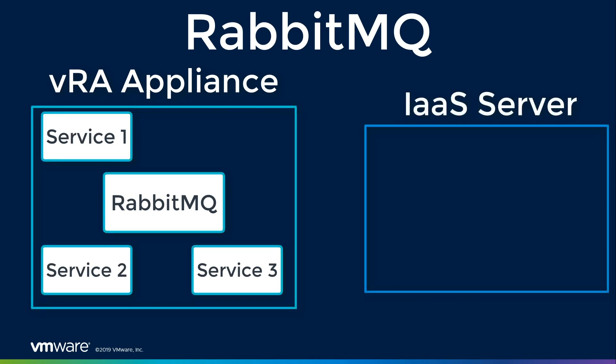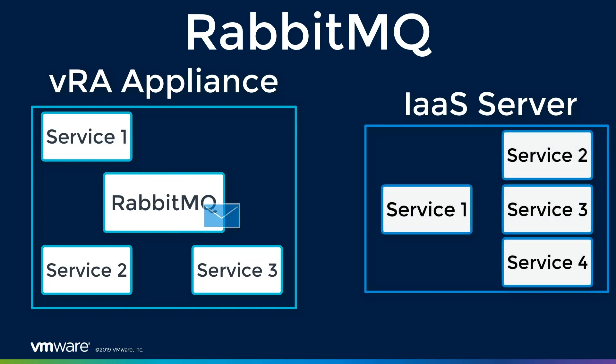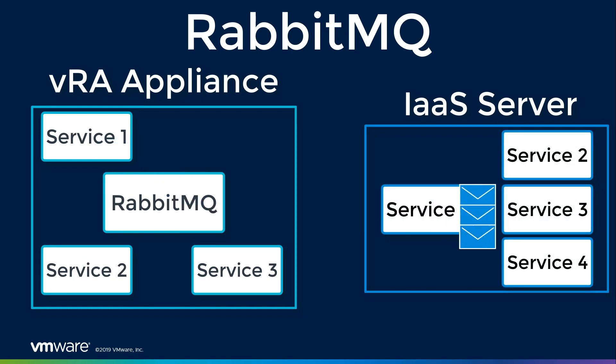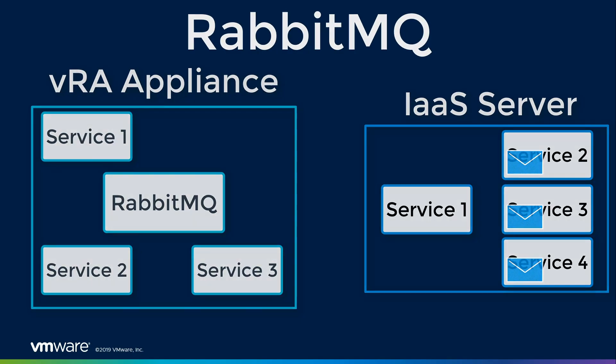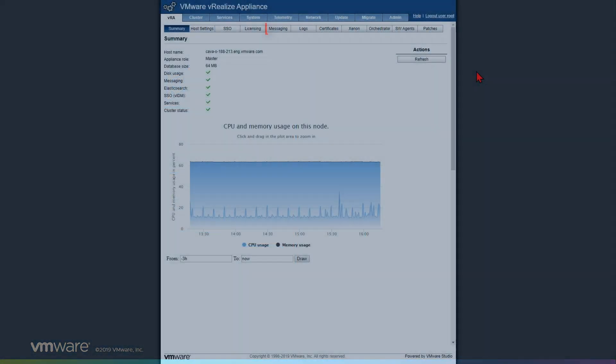RapidMQ is also used when VRA wants to communicate with our IS server. Once the message gets to our IS web server, it uses a different communication method, but RapidMQ is used to facilitate that communication between the two servers.